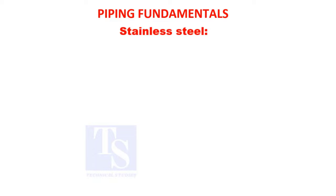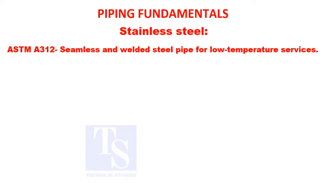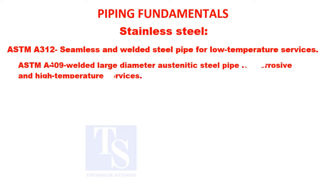Stainless steel ASTM A-312: seamless and welded steel pipe for low temperature services. ASTM A-409: welded, large diameter, austenitic steel pipe for corrosive and high temperature services.